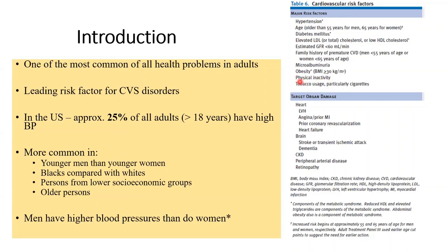A sedentary lifestyle even in the youth leads to premature hypertension — this is very bad. And the absolutely horrendous habit of tobacco smoking is one of the leading causes of cardiovascular disease. We will revisit this table later in the lecture.